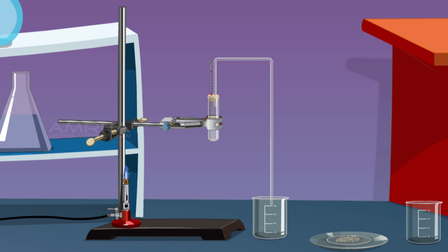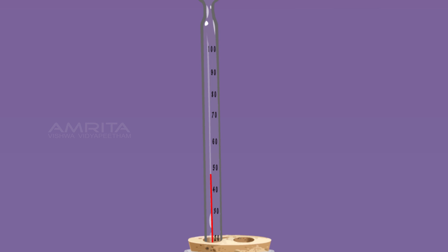Take a Bunsen burner and heat the boiling tube gently by rotating the flame. Note the temperature T1 when the boiling of water starts.